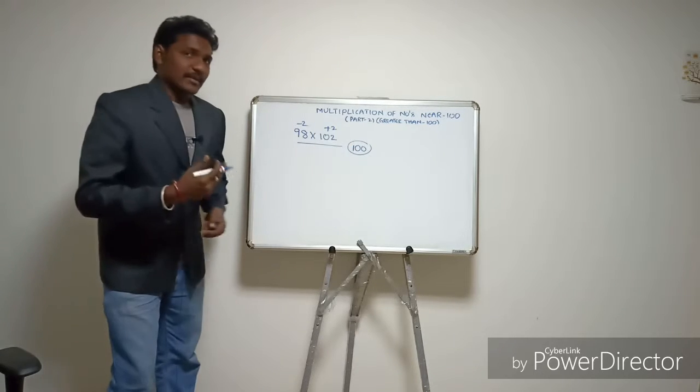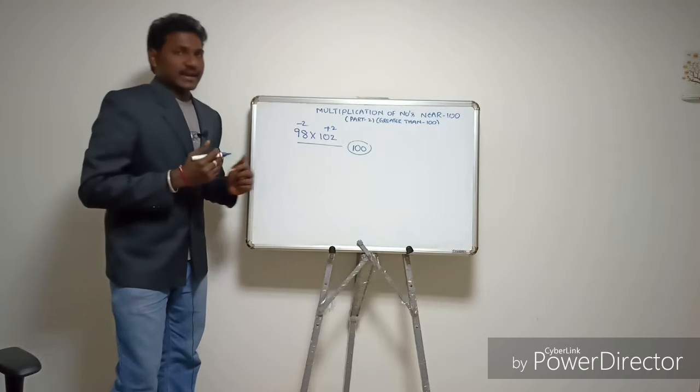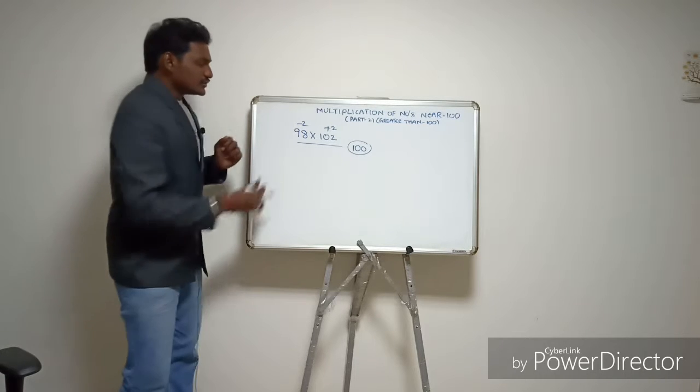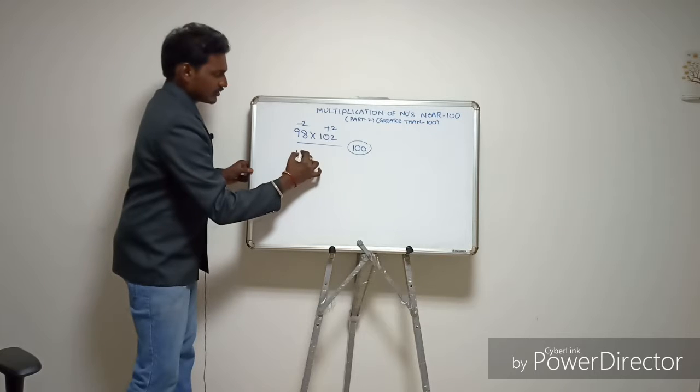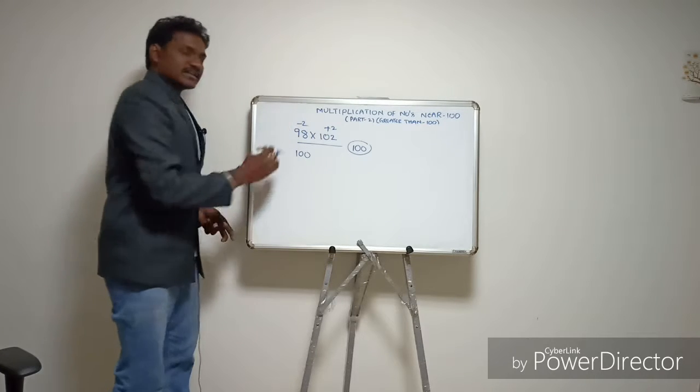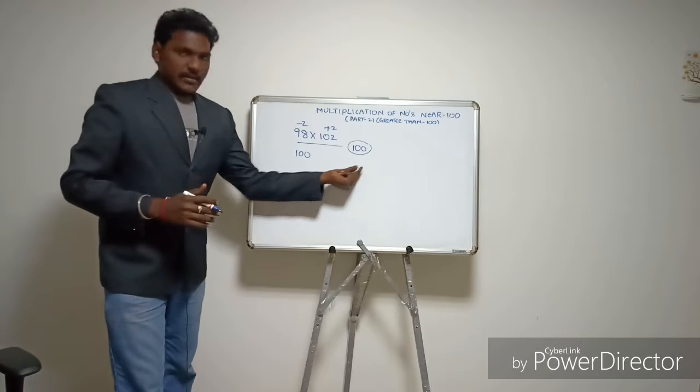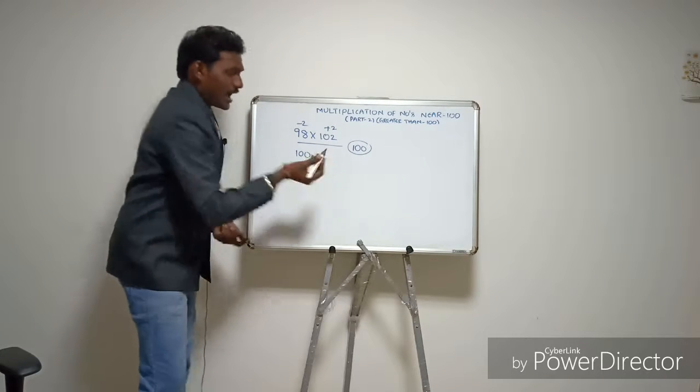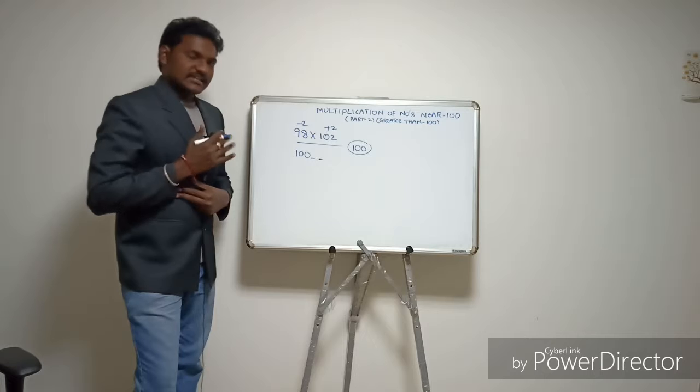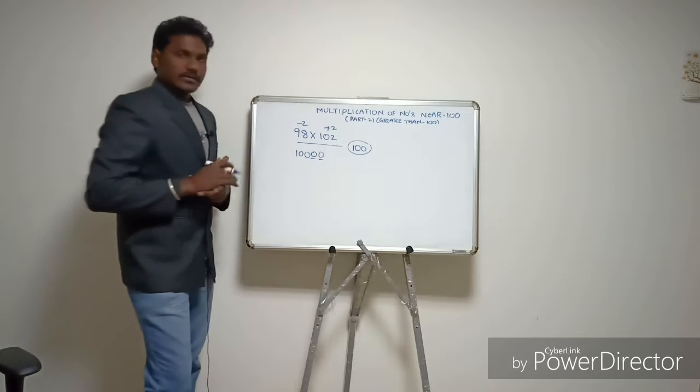Now, if we add 2 to 98, we get 100. For the result, we write 100 in the first part. Then multiply the differences: minus 2 times plus 2 equals minus 4.